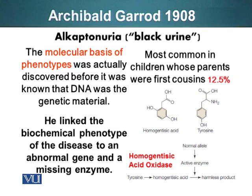Low levels of homogentisic acid can be tolerated, but if the enzyme homogentisic acid oxidase is missing or non-functional, homogentisic acid will accumulate and cause damage. Garrod was able to link the biochemical phenotype of the disease to an abnormal gene and a missing enzyme found in the blood samples.